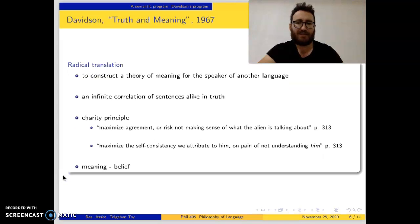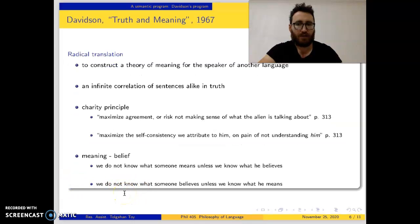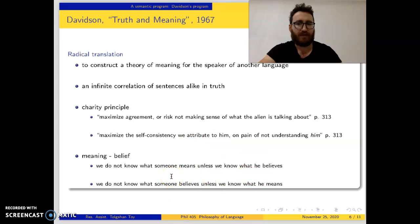There is this meaning-belief relation that we use in ordinary communication as well, but in the radical translation case it is far more important. Because in that case, we do not know what someone means unless we know what he believes — we need to know what he believes in order to understand what he means. But in order to know what he believes, we need to know what he means. So there is a circularity here between belief and meaning — which one comes first?